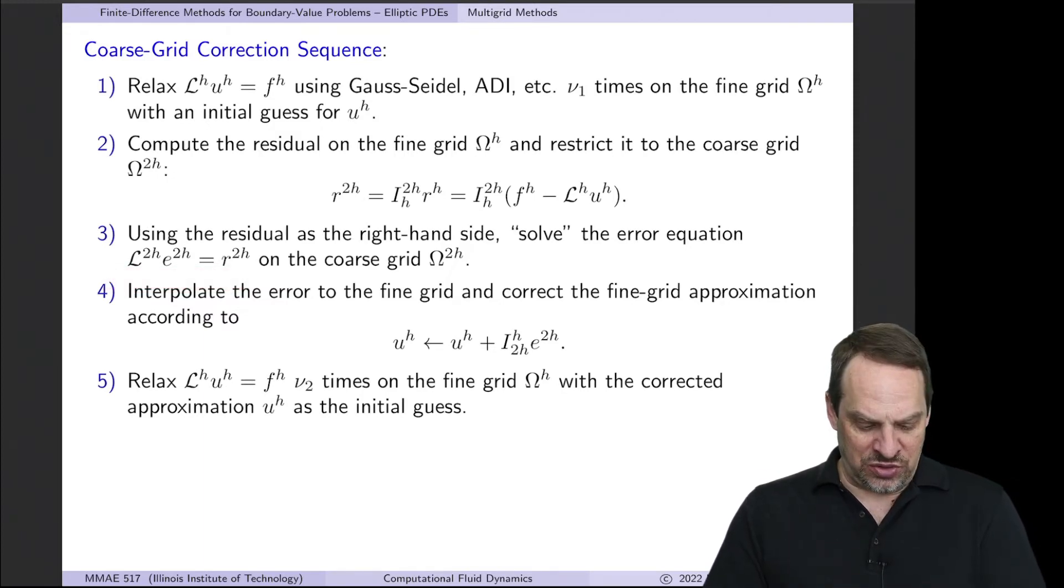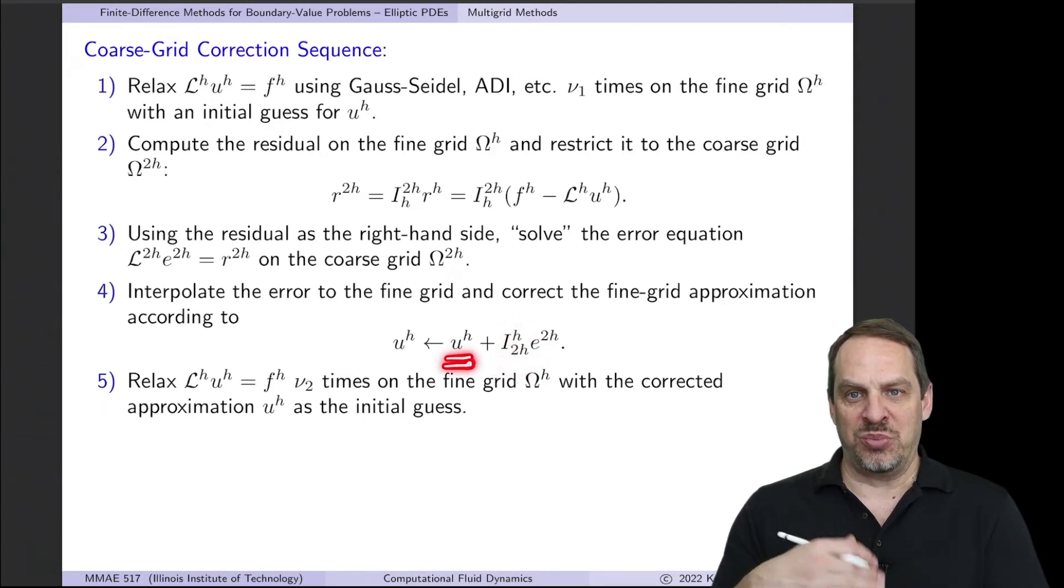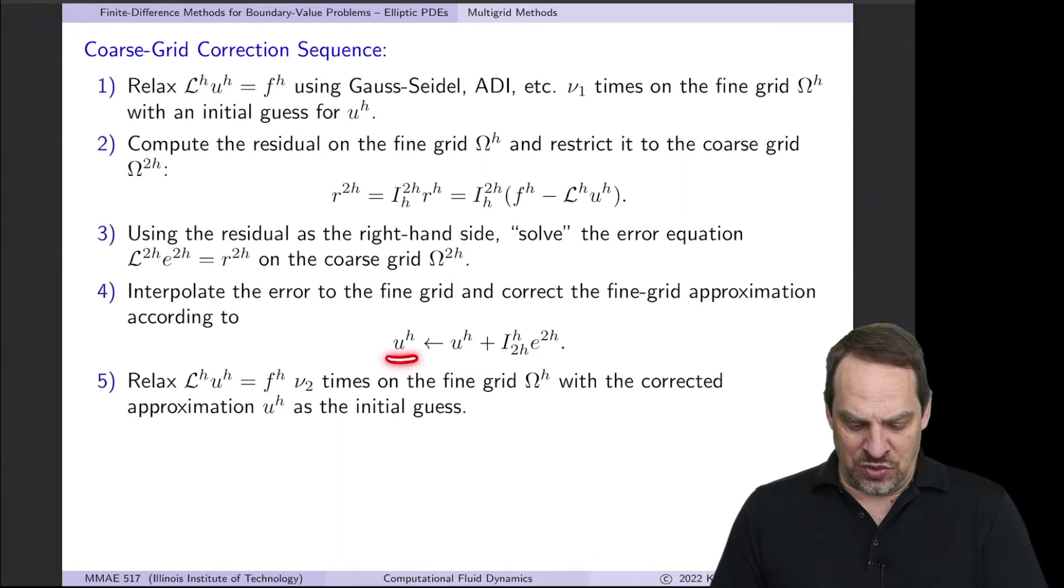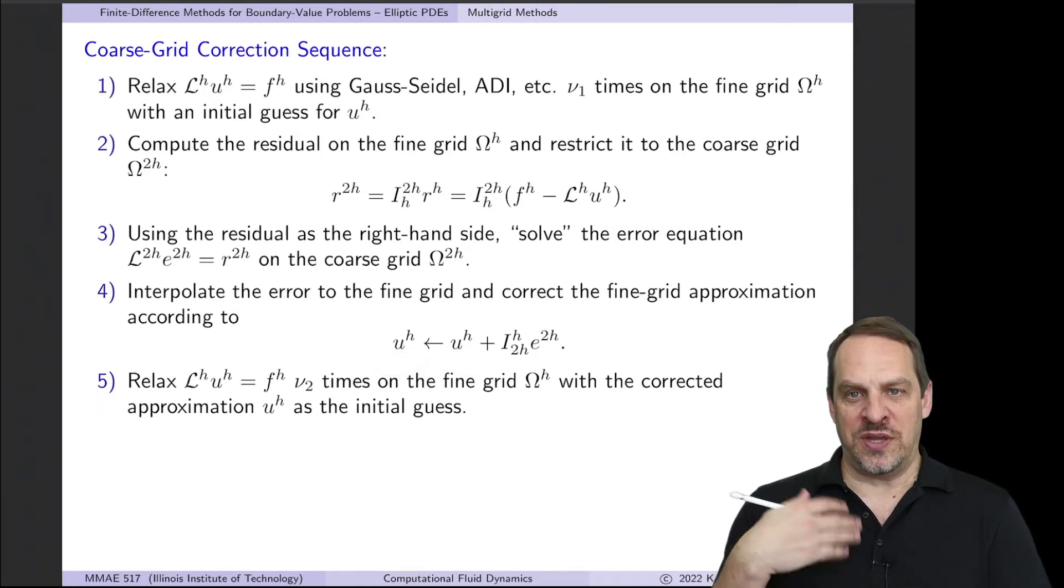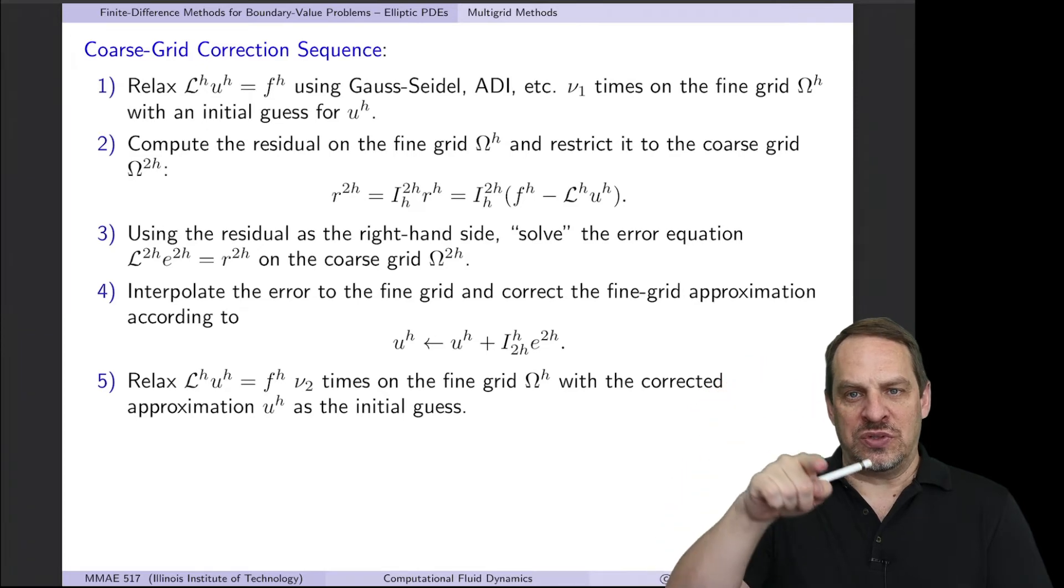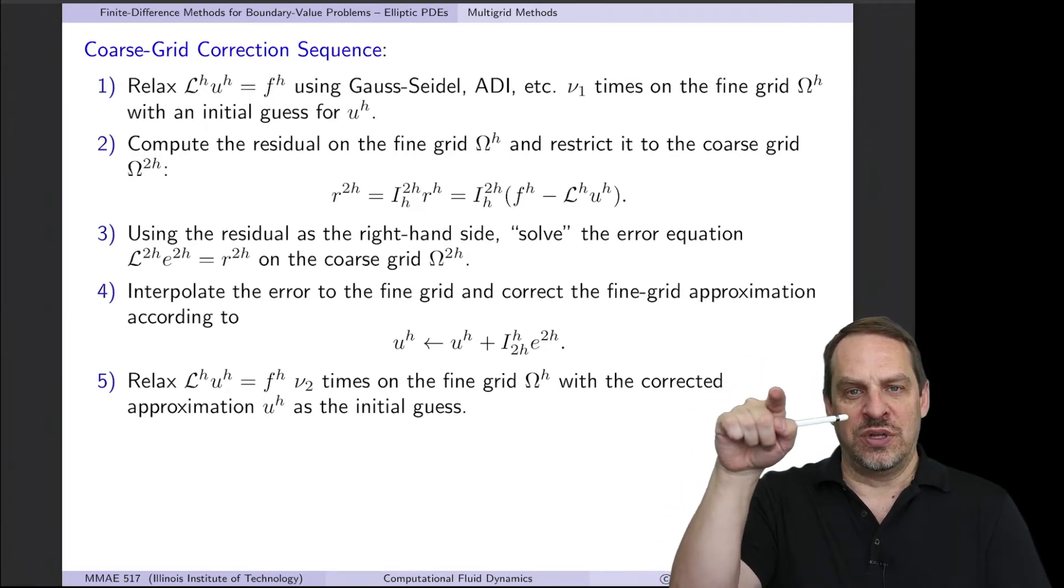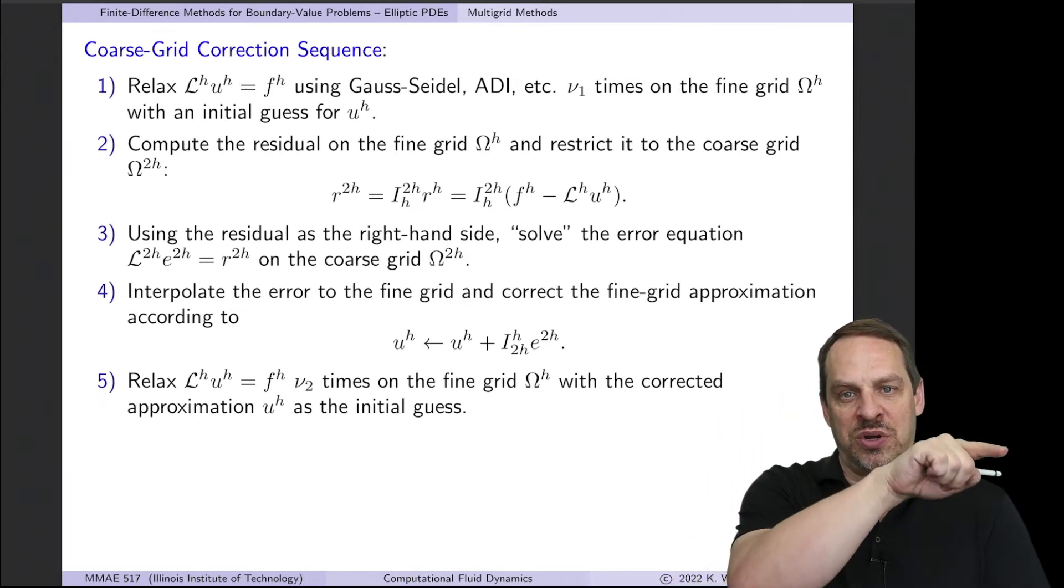Once we have that solution for the error, we can use that to correct the solution on the finer grid. Again, reading from right to left, we have the error on the coarse grid, we interpolate that up to the fine grid, use that to correct the approximation that we had previously from step one to get a new approximation for U on that fine grid. So in that way, we've used this coarse grid correction to correct the original approximation that we had in step one on the fine grid with now a better approximation using the coarse grid correction.